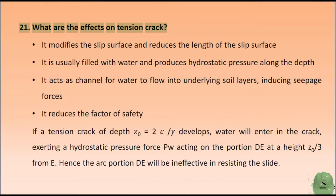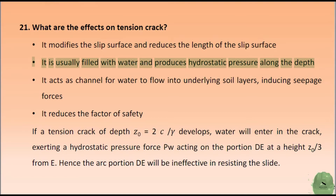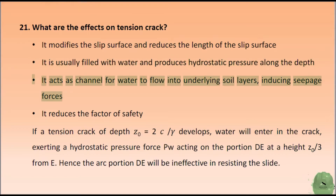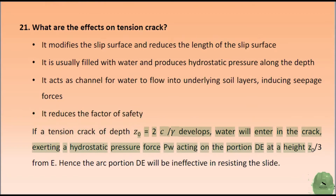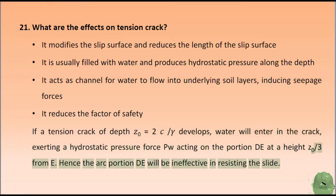What are the effects of a tension crack? It modifies the slip surface and reduces the length of the slip surface. It is usually filled with water and produces hydrostatic pressure along the depth. It acts as a channel for water to flow into underlying soil layers, inducing seepage forces. It reduces the factor of safety if a tension crack of depth z₀ = 2C/γ develops. Water will enter the crack, exerting a hydrostatic pressure force Pw acting on the portion at a height z₀/3 from the base, making that arc portion ineffective in resisting the slide.